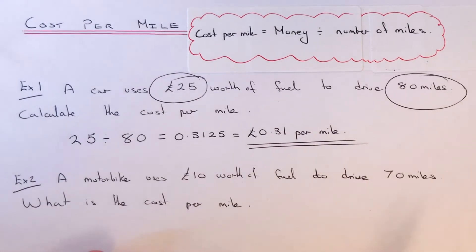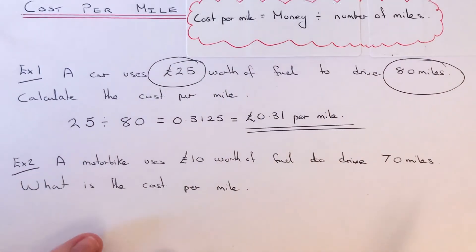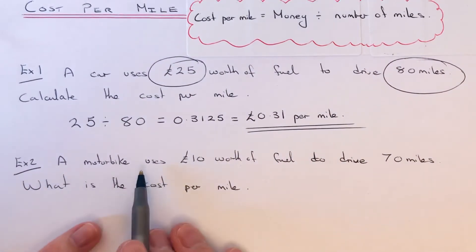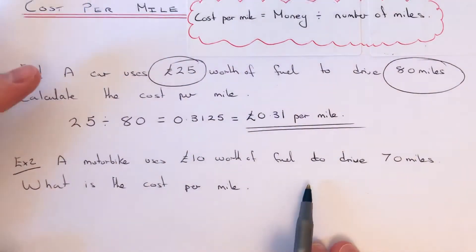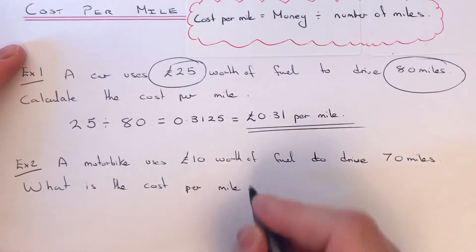Let's have a look at the second example then. A motorbike uses £10 worth of fuel to drive 70 miles. What is the cost per mile?